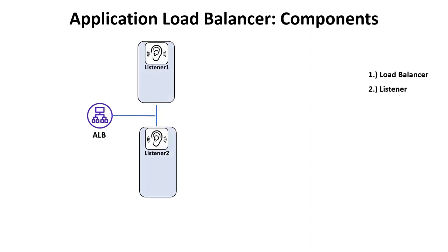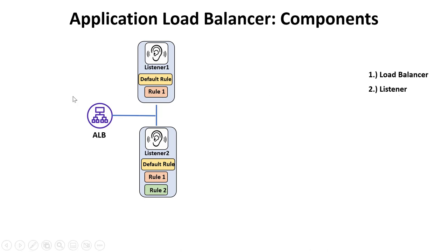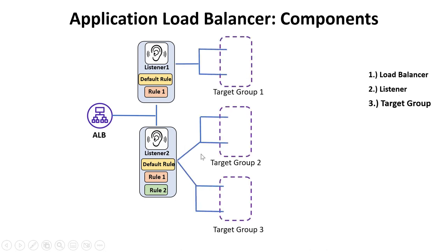The next component is the Listener. A listener is a process which checks for incoming requests based on the protocol and port you configure. Once a request is found matching the configured port and protocol, there will be rules defined on the listeners. Every listener will have a default rule, which is a rule of last resort — if nothing else matches, this rule will be applicable and decide to which target the traffic gets delivered. Other than the default rule, you can also have custom rules assigned to your listener.